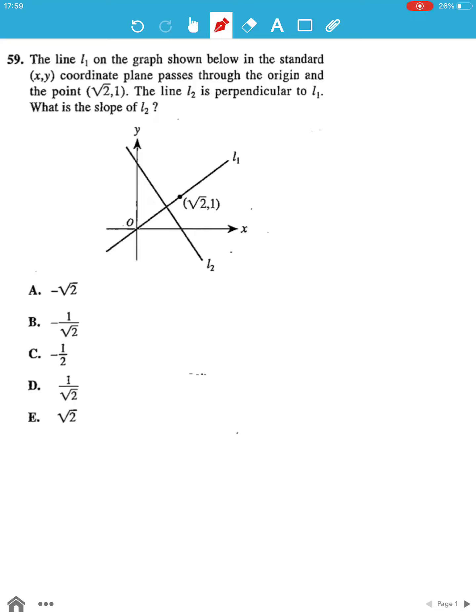For question number 59, we have two lines L1 and line L2, and both of these lines are perpendicular to each other, so they are at 90 degrees. We have to find out the slope of L2.